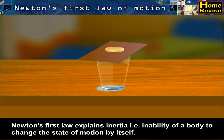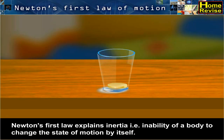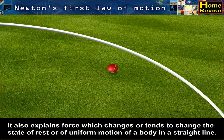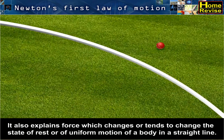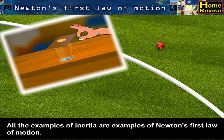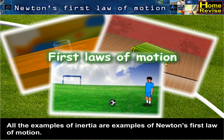Newton's first law explains inertia, i.e. the inability of a body to change the state of motion by itself. It also explains force, which changes or tends to change the state of rest or of uniform motion of a body in a straight line. All the examples of inertia are examples of Newton's first law of motion.